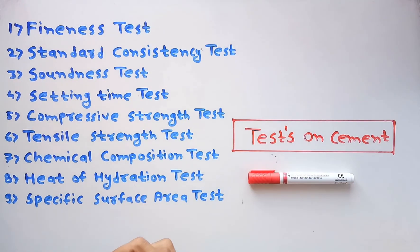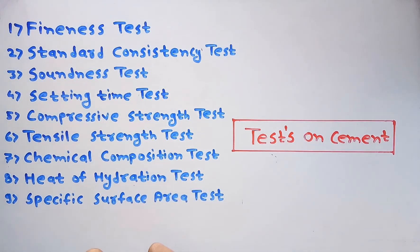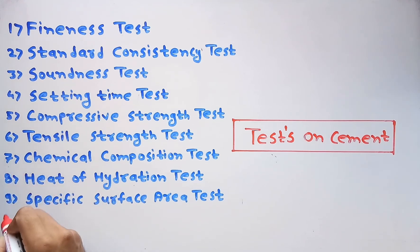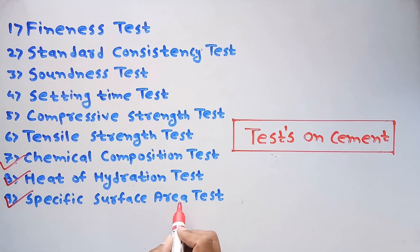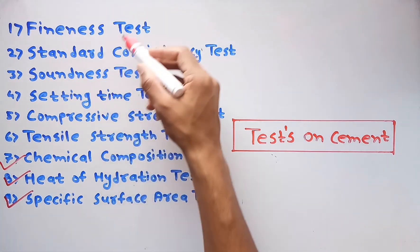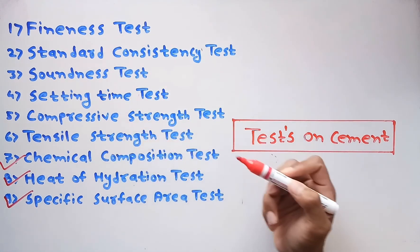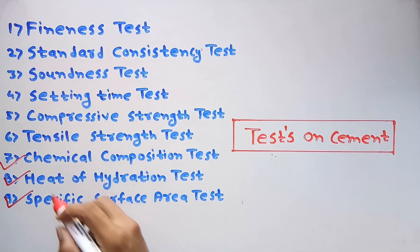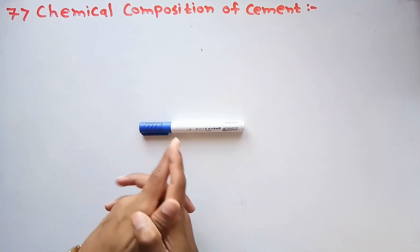Hello friends, welcome to my channel. We are continuing with our topic that is tests on cement. In this video we are going to cover the three remaining tests: chemical composition test, heat of hydration test, and specific surface area test. All the previous tests are available in the previous video, so you can check that out. We will move forward with the chemical composition test, which is our seventh test.